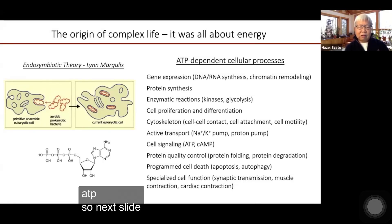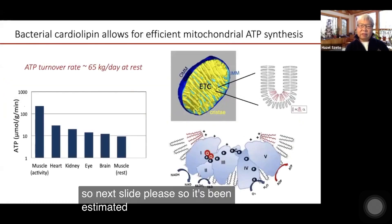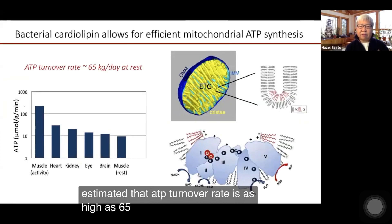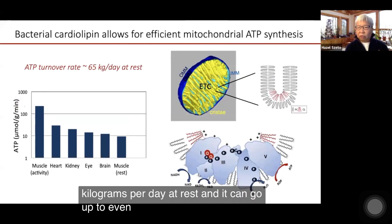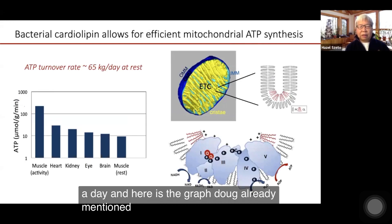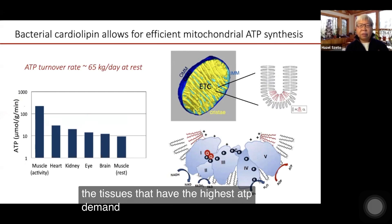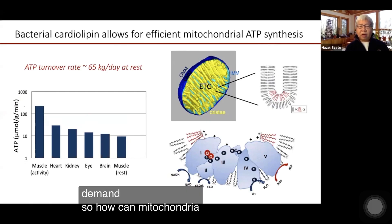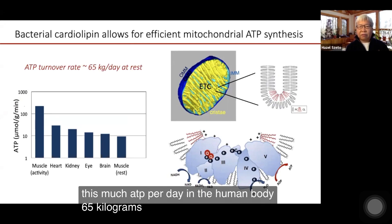ATP. It's been estimated that ATP turnover rate is as high as 65 kilograms per day at rest, and it can go up to even 200 kilograms a day. Here is the graph. Doug already mentioned the tissues that have the highest ATP demand. So how can mitochondria possibly produce this much ATP per day in the human body — 65 kilograms?